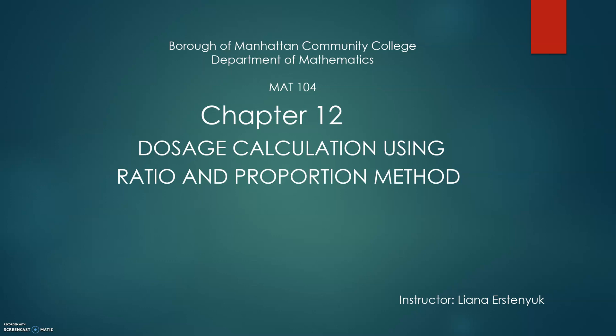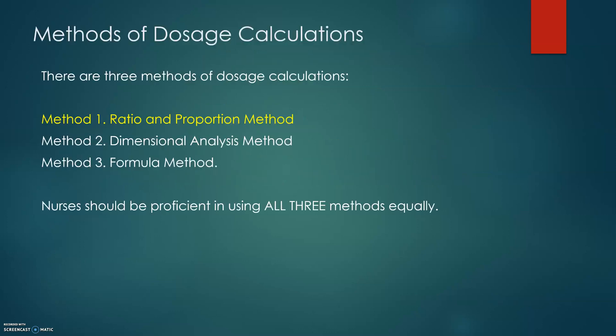Chapter 12: Dosage calculation using ratio and proportion method. In the following three chapters we are going to discuss three different methods of dosage calculation. Method one: ratio and proportion method. Method two: dimensional analysis method. Method three: formula method. Nurses should be proficient in using all three methods equally, and that's required by the nursing department at least at BMCC. I would recommend learning all of them so you will be tested on all three different methods, and what is most important, these three methods have advantages and disadvantages.